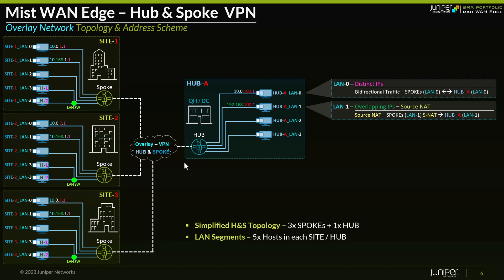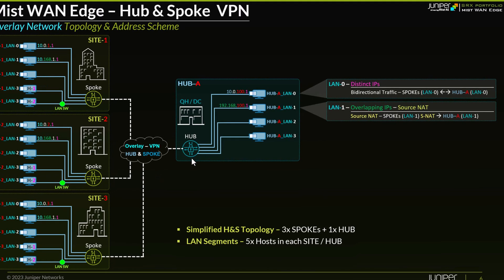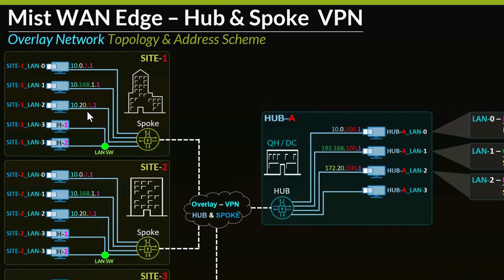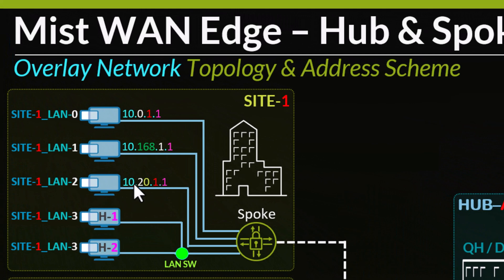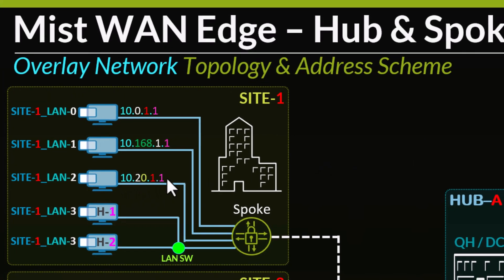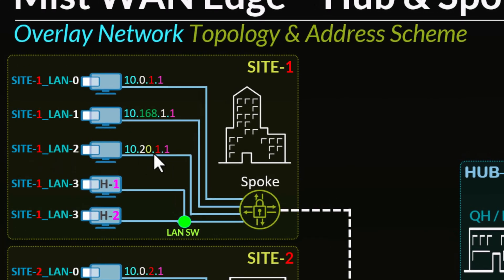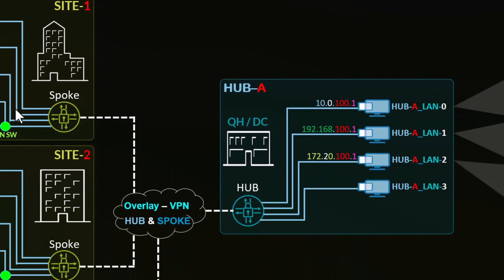By the way, in this example you don't see the underlay network — the overlay VPN is just a schematic included here, but actually it's going to be IPsec tunnels connecting the spokes to the hub. LAN 2 is where we'll be showing a use case where we use static NAT. These are not overlapping IPs; however, there is a requirement that every host on the spoke side — for example, site 1 LAN 2 host 10.20.1.1 — needs to be statically NATed to a different IP, 172.20.1.1.